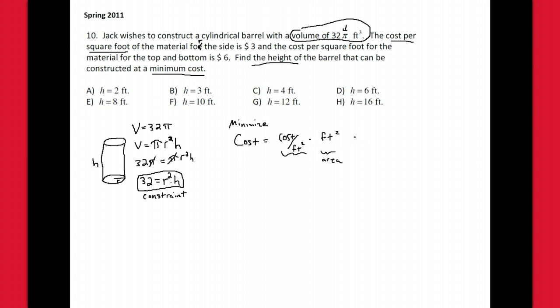Okay, so here we go. Cost is equal to: the side is three dollars, so the cost is three dollars per square foot. What is the area of the side? Think of picturing slicing a label on a can and unrolling it—you get a rectangle. When you unroll it, the circumference would be 2πr, and then the height stays as the height. So the area of the side is 2πrh.